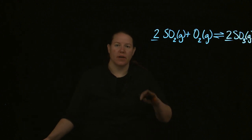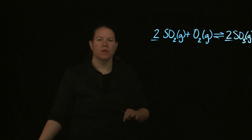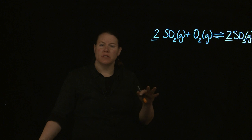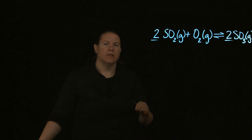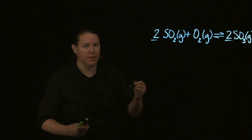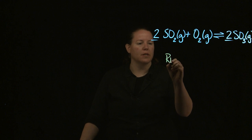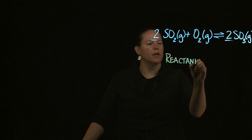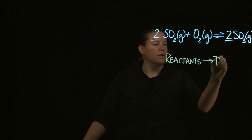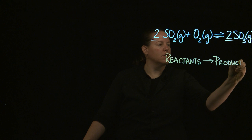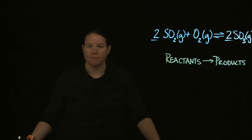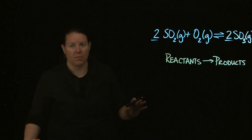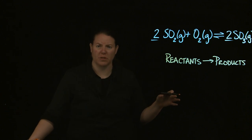Throughout General Chemistry 1 in particular, we spend an inordinate amount of time talking about the reactants and the products and the fact that reactants go to products. So what we tend to think about is a single-headed arrow — reactants go to products, that's how it is, life is good. The biggest fundamental problem with this is that this is not how most chemical reactions go.